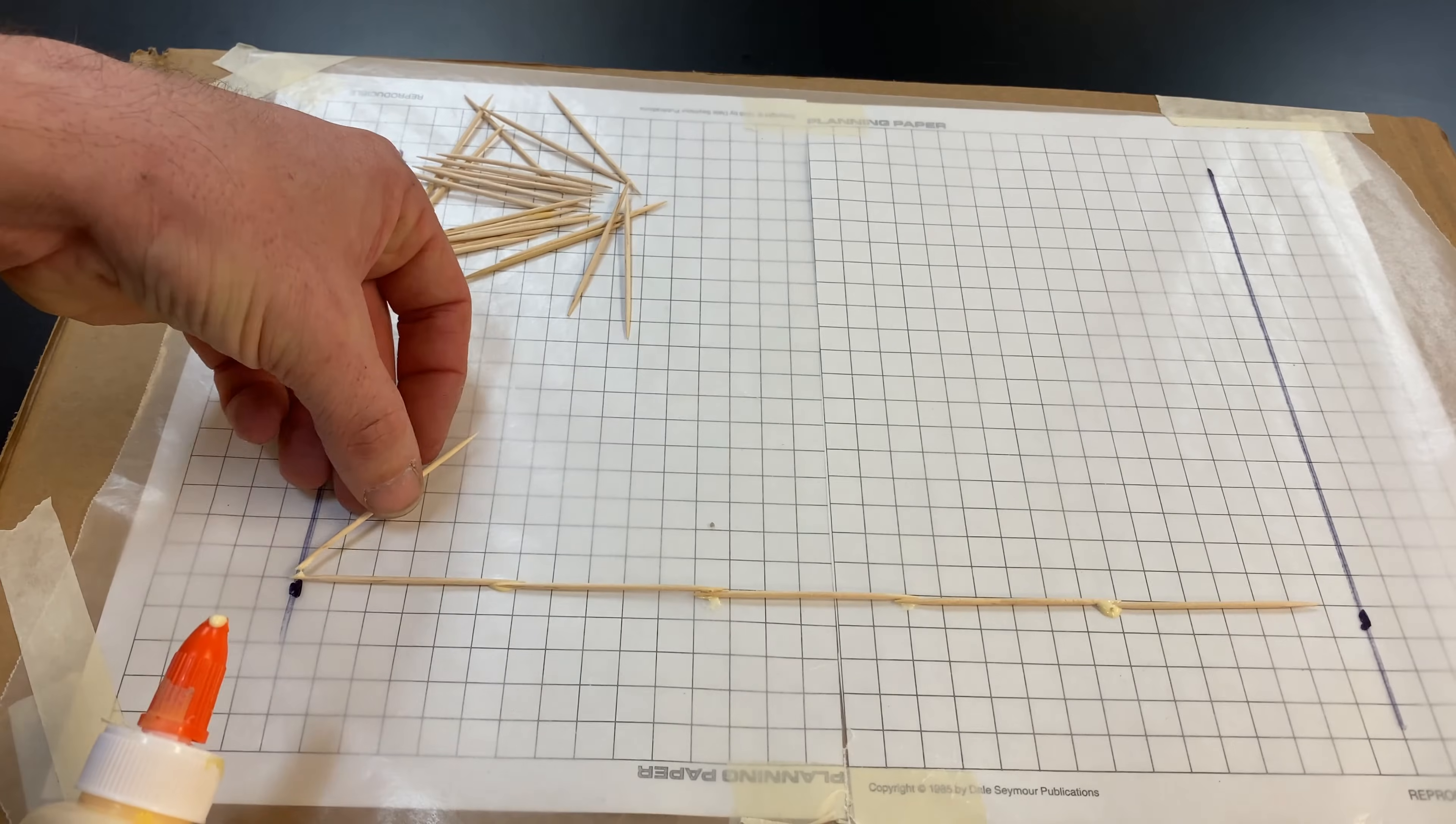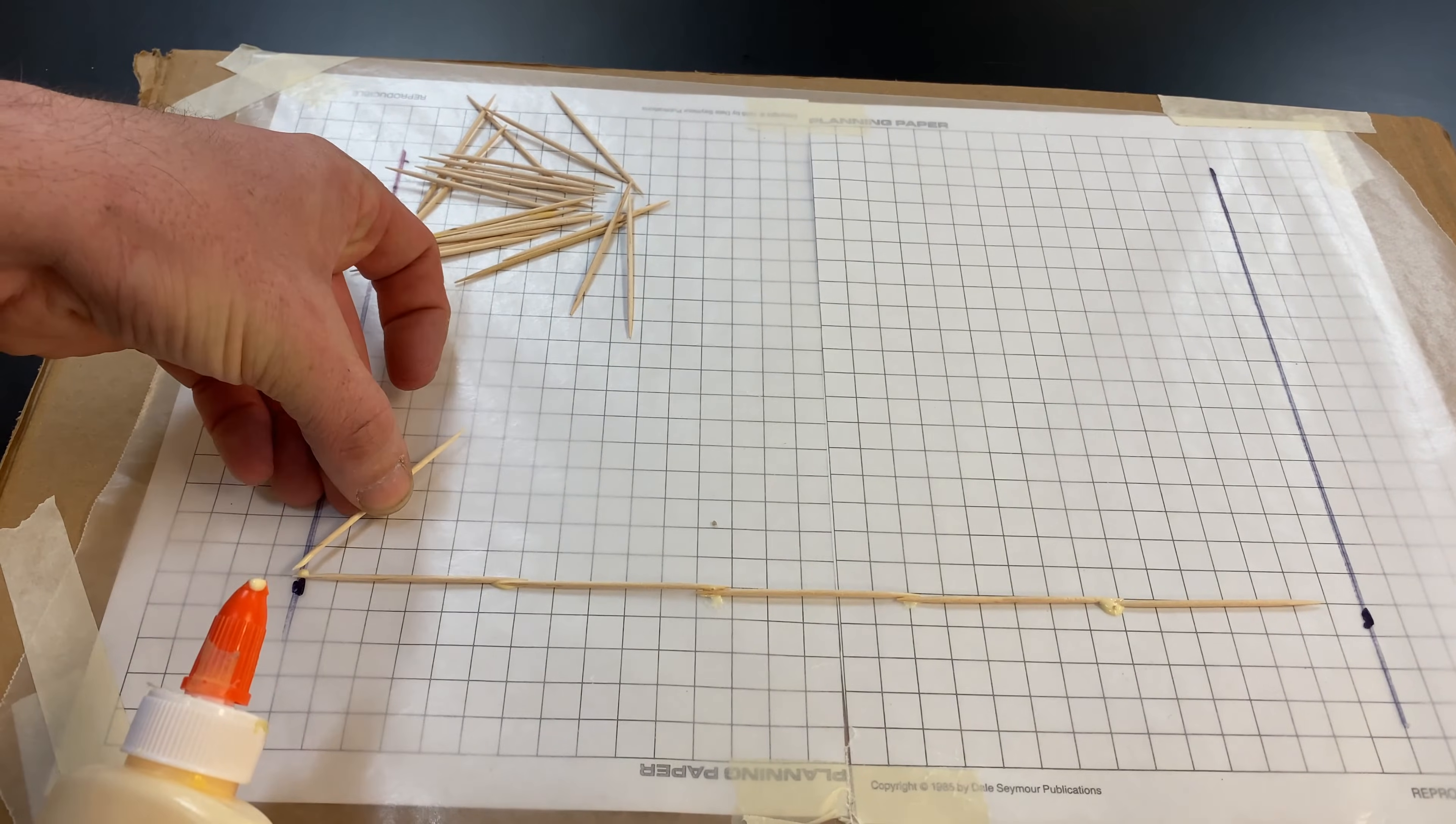Tiny dabs of glue are all you need. Wood glue creates a stronger bond than Elmer's.